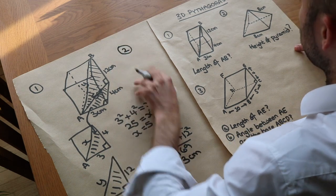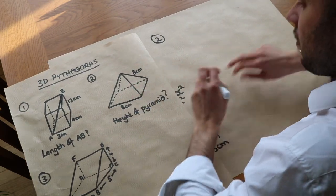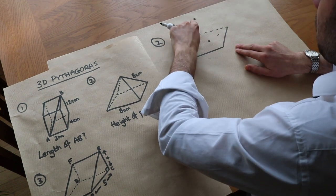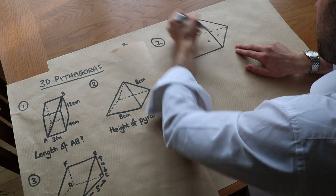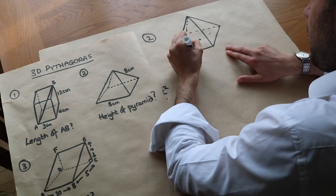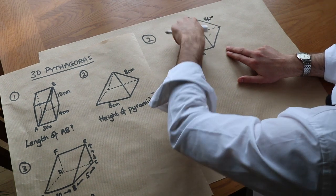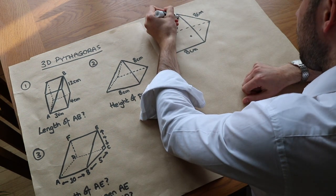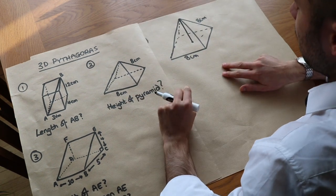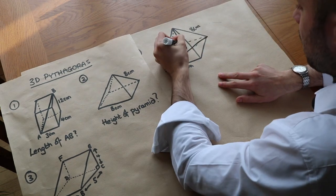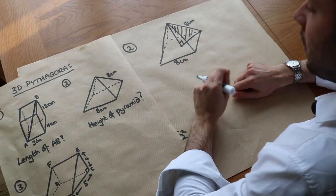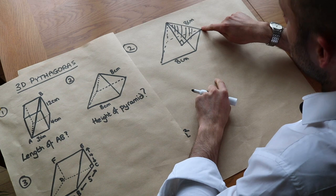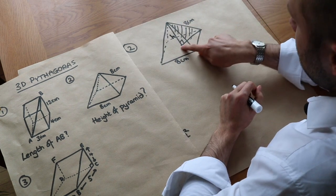Now let's do a second example — it's very common to find the height of a pyramid. When drawing a pyramid, I put a dot in the middle of the base and the apex is directly above it. We've got 8 centimeters on each edge. We want to find the height, and we can form a right-angle triangle by adding a line from the apex down to the base — giving us a 2D triangle floating in 3D space.